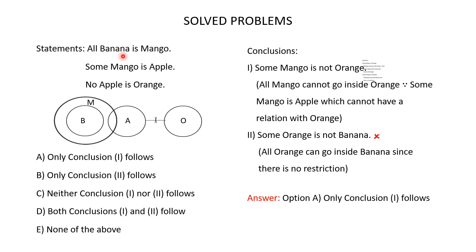All banana is mango means in the Venn diagram all banana should be inside mango. Some mango is apple means there has to be a partial overlap between mango and apple. No apple is orange — draw a circle for orange, then draw a line with a cross from apple to orange to indicate that no apple is orange. Now this is the Venn diagram for the given statements. Based on this Venn diagram, let's find out which of the given conclusions follow.